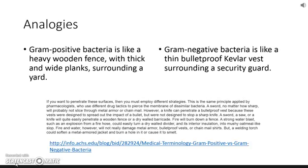Here are a few analogies: gram positive bacteria is like heavy wooden fences with thick and wide planks surrounding a yard - it protects that yard from certain things. Whereas gram negative bacteria is like thin layers of bulletproof vest, which is super hard to get through and protects the bacteria very durably. So if you want to penetrate these surfaces, you're going to use different weapons. A saw could cut through the wooden fence, whereas a bullet can't shoot through the Kevlar vest but could shoot through a wooden fence. That's how doctors decide what treatment would work.